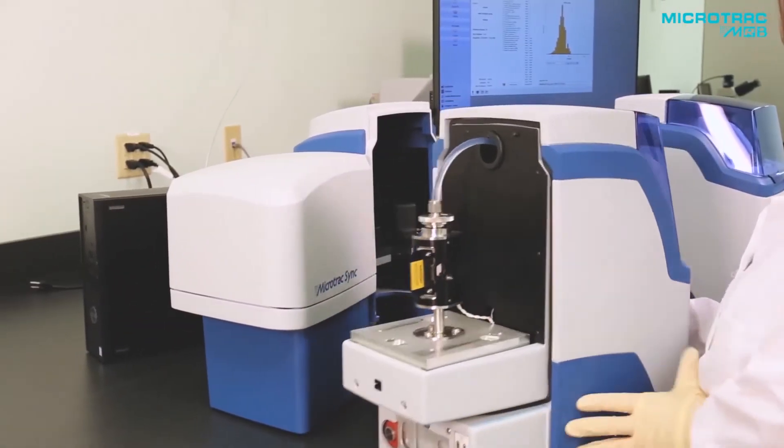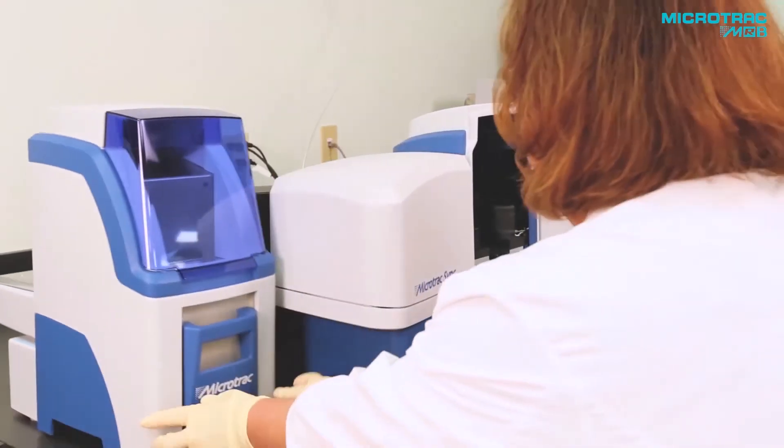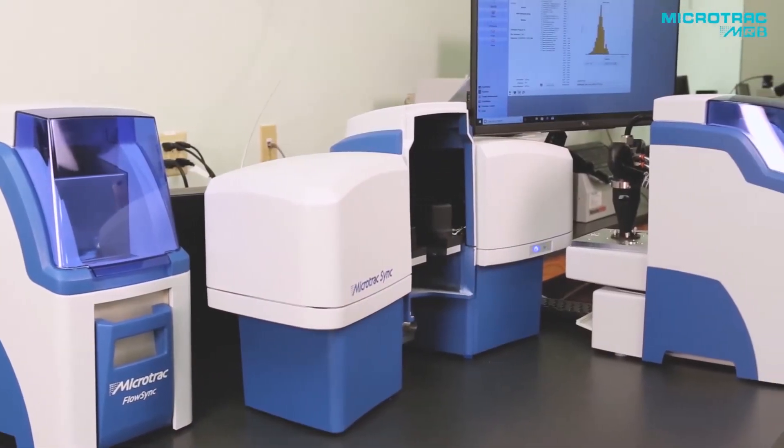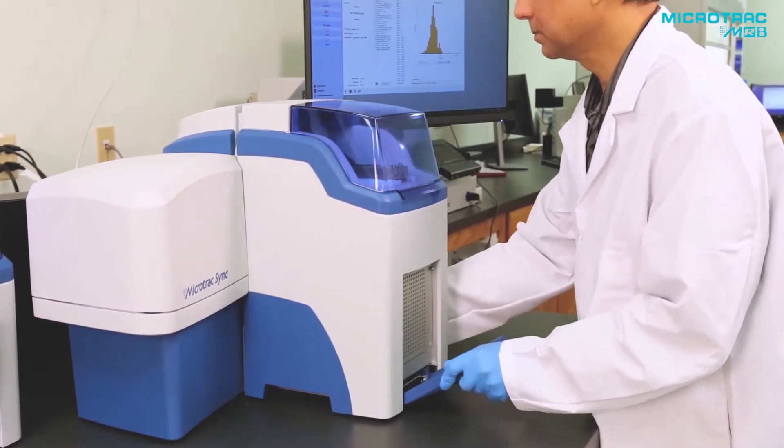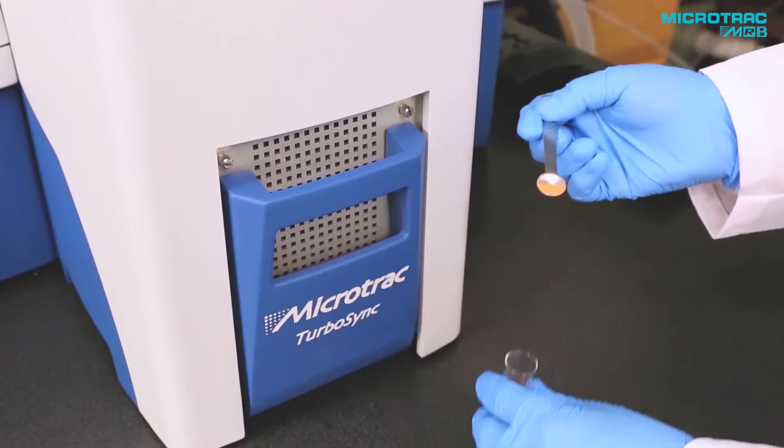Dry measurements are just as easy. Simply disconnect the flow sync and replace it with the turbo sync. All air and fluid couplings are automatic. Now we're ready to run.